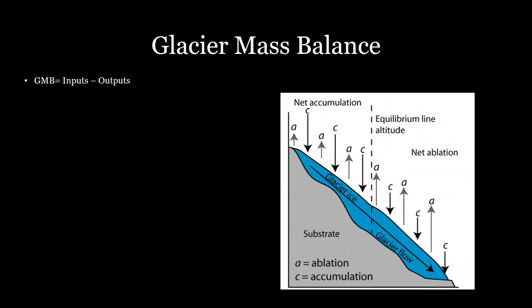We can classify the amount of melting and accumulation by the glacier's mass balance. Mass balance is just the inputs to a glacier minus the outputs. In the accumulation zone, you have a net positive mass balance — it's accumulating more than it's losing. Higher up on the glacier there's less melting because it's colder, whereas further down in the ablation zone the inputs are not as high as the outputs, so there is net melting.